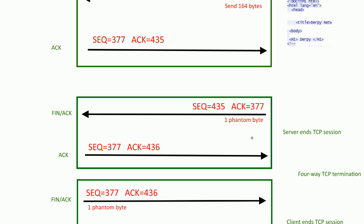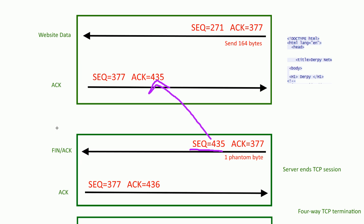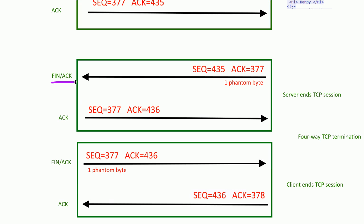Now the server will close the connection because it sent the data and it's all done. The sequence here is 435 because the acknowledgement said the client expects to see back the 435th byte, and sure enough the server sends the 435th byte even though there isn't a payload. The acknowledgement is 377, unchanged from the last one because we haven't received anything new. Because the FIN bit is set, it's as if we sent one phantom byte — just like in the three-way handshake, now in the four-way termination.